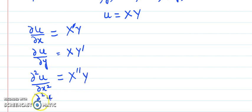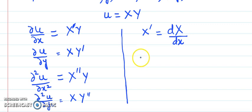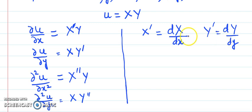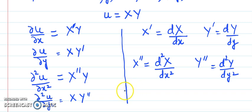Similarly, if there is differentiation with respect to y two times, we write X times Y''. Here, X' means the ordinary derivative of capital X with respect to small x, and Y' means the ordinary derivative of capital Y with respect to small y. X'' and Y'' denote the corresponding second ordinary derivatives. These are just notations and we must take care of them throughout.